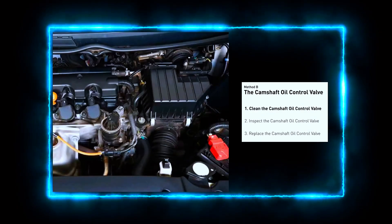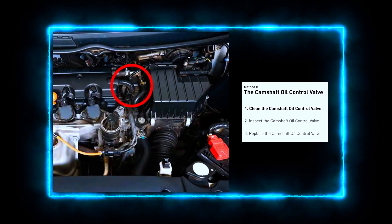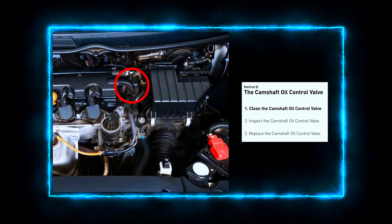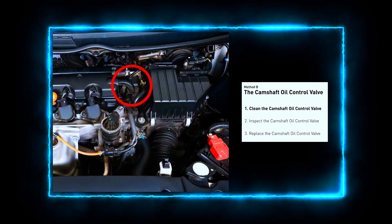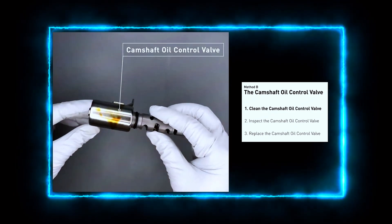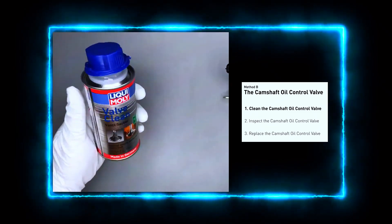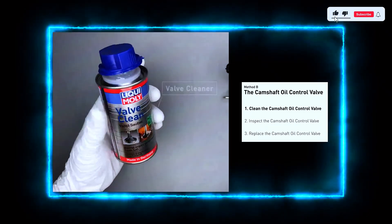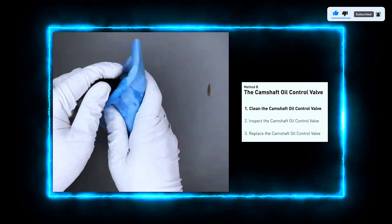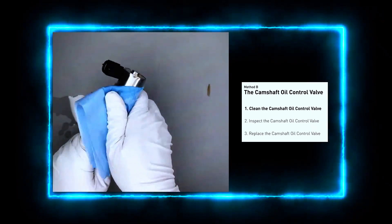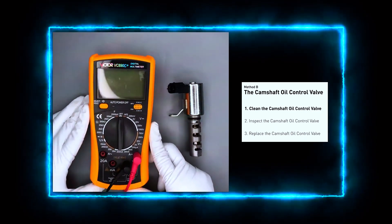Next, locate the camshaft oil control valve. Depending on your vehicle, it's usually mounted on the cylinder head near the camshaft — you'll typically find it bolted to the engine block with an electrical connector attached. Clean the oil control valve using brake cleaner or electrical contact cleaner spray, thoroughly removing any dirt or sludge buildup. Be sure to clean the valve's filter and any passages, then wipe it down with a clean cloth and let it air dry for a few minutes.